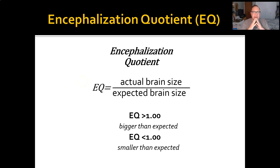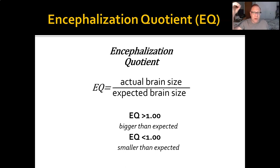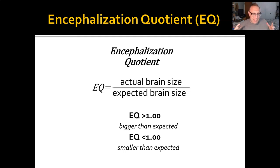The problem is that absolute brain size is a very poor indicator of how brains are actually working, what they actually do. Instead, we rely on something called encephalization quotient. The encephalization quotient, or EQ, is the actual brain size divided by the expected brain size. It's just a ratio — a division problem. Actual to expected. If you have an EQ greater than 1, the brain is bigger than what you would expect for a creature that size. If it is smaller than 1, then it has a brain that is smaller than you would expect for a creature that size.